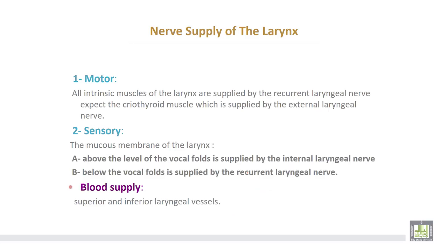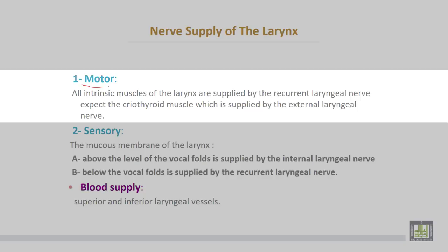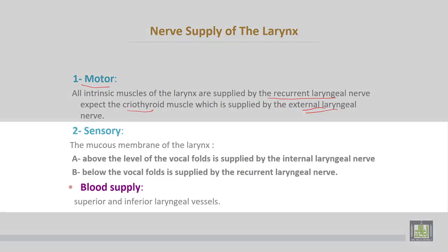The nerve supply of the larynx — motor supply: all intrinsic muscles of the larynx are supplied by the recurrent laryngeal nerve, except the cricothyroid muscle, which is supplied by the external laryngeal nerve. Sensory supply: the mucous membrane of the larynx above the level of the vocal cords is supplied by the internal laryngeal nerve, while the mucous membrane below the vocal cords is supplied by the recurrent laryngeal nerve.